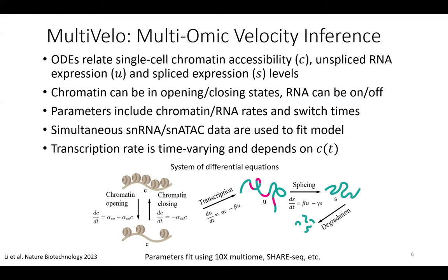The first project I'll describe essentially adds a new dimension to this approach by incorporating measurements from single-cell multiomic data, where you can measure epigenome and transcriptome in the same cell. The idea is that when modeling transcription this way, we need to incorporate the chromatin state of the locus being transcribed, because a promoter must first be opened before it can be transcribed. With data from 10x Multiome or related technologies — where we can see chromatin state, unspliced RNA, and spliced RNA in the same cell — we add a third differential equation to describe the joint distribution of chromatin accessibility, unspliced RNA, and spliced RNA over time. We added a new differential equation describing chromatin opening and closing, making the transcription rate a function of the chromatin state of the promoter and linked regulatory elements.